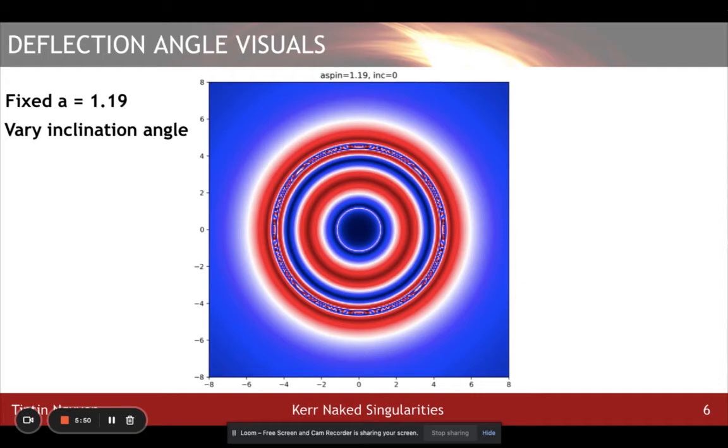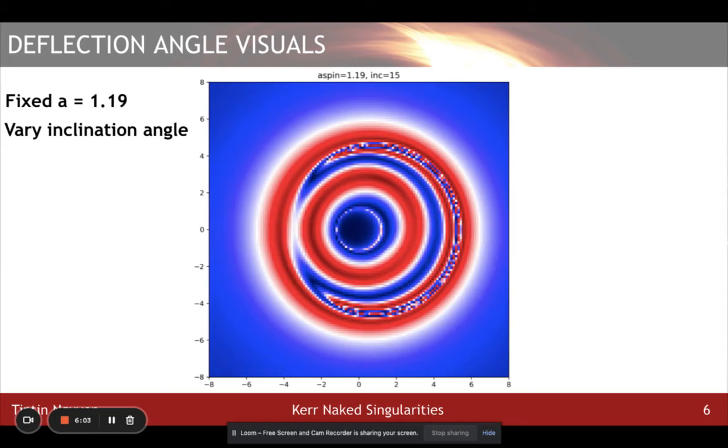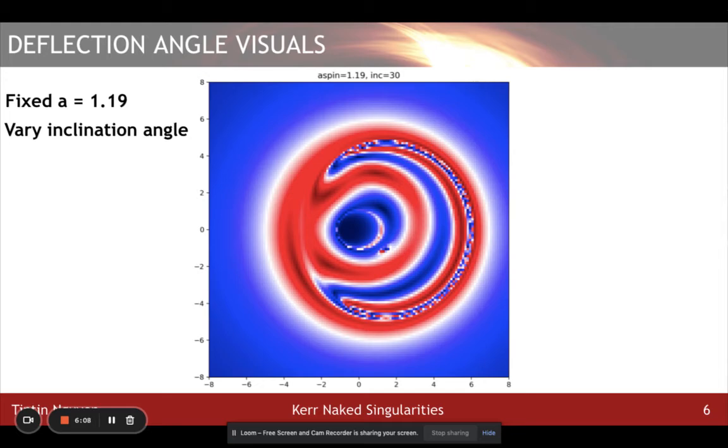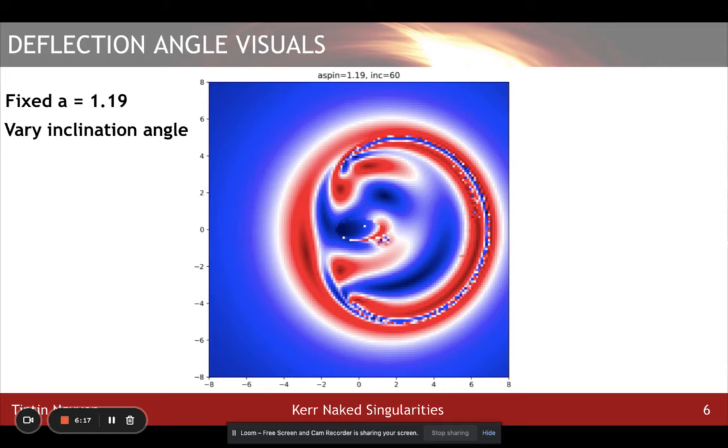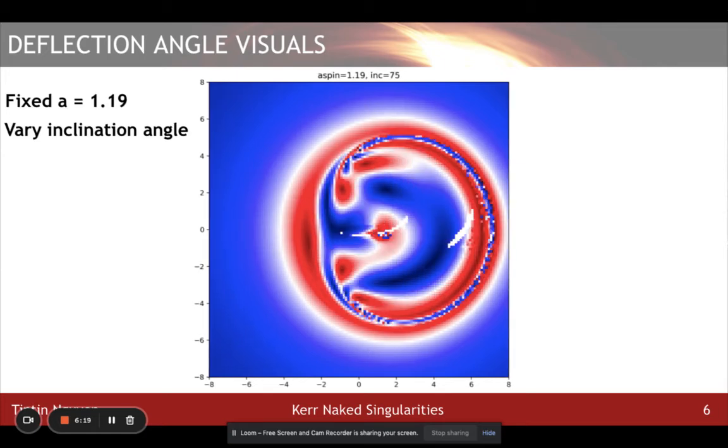Now, I will show a series of deflection angle visualizations with fixed spin A equals 1.19 and varied inclination angle. We will start with zero-degree inclination angle, which is face-on. As I increase the inclination angle, transitioning from face-on to edge-on, the apparent shape of the naked singularity shifts rightward. The lens and mirror's region inside the spherical orbits seem to transition continuously as I increase the inclination angle.